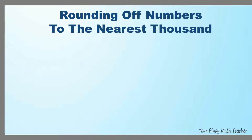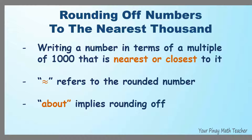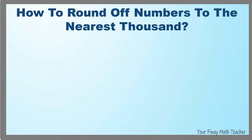What does rounding off numbers to the nearest thousand mean? It is writing a number in terms of a multiple of 1,000 that is nearest or closest to it. This symbol refers to the rounded number and the word 'about' implies rounding off.